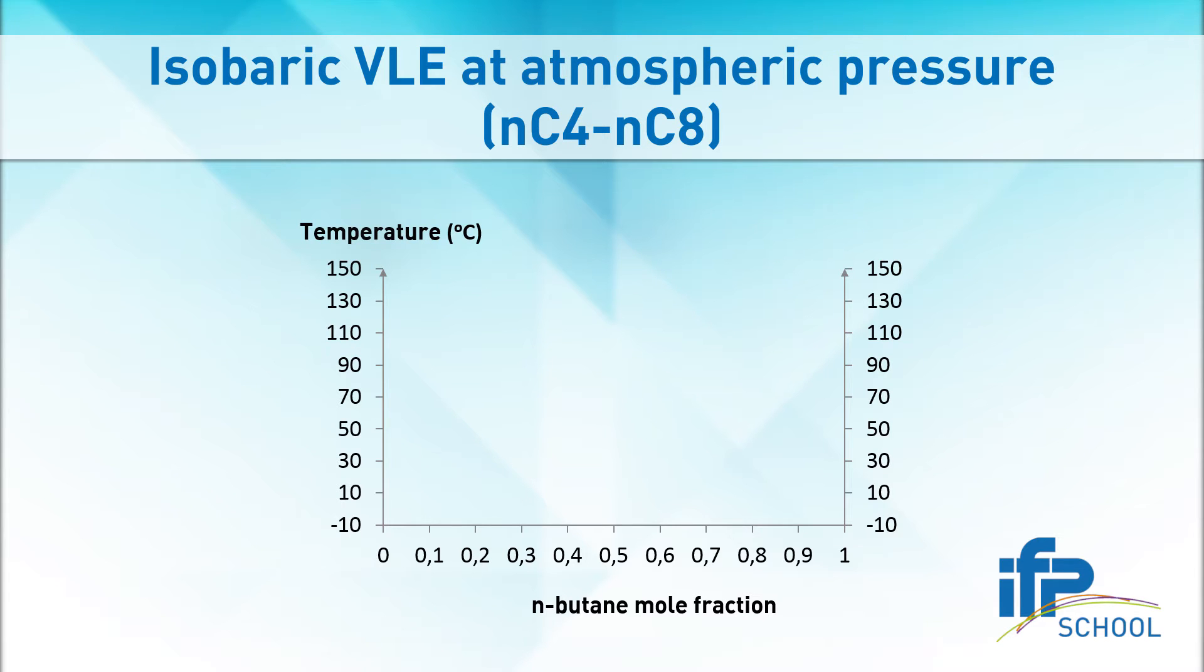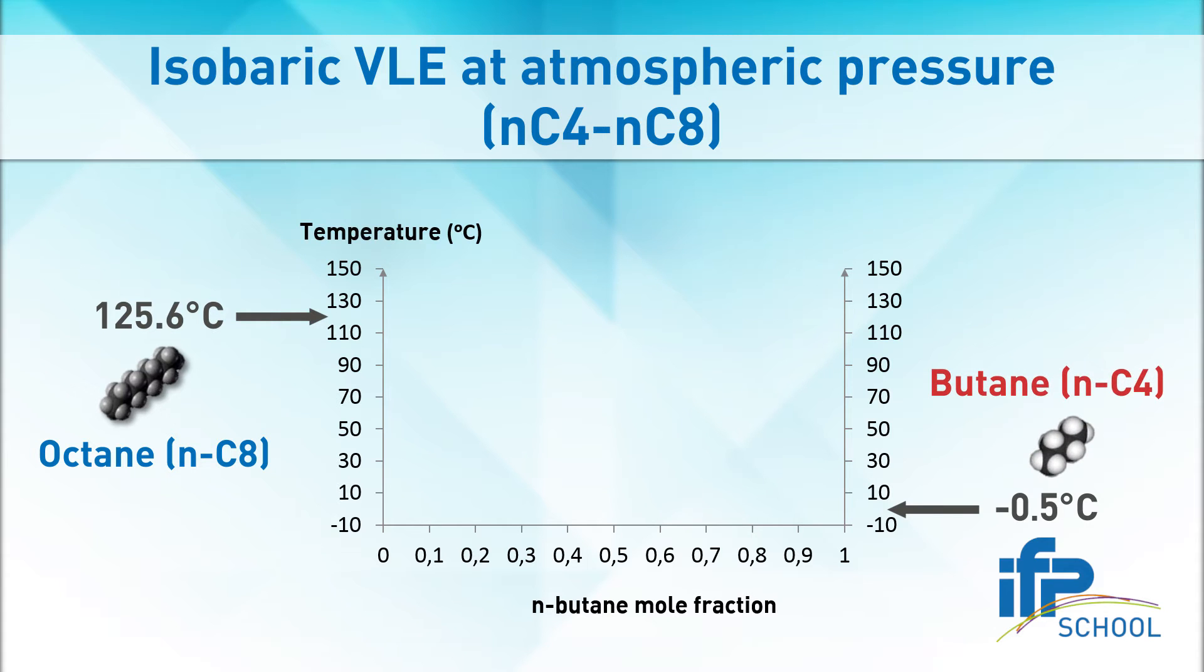It shows the phase behavior of n-butane and n-octane at atmospheric pressure. On the left, 125.6 degrees Celsius, this is the boiling temperature of octane. On the right, minus 0.5 degrees Celsius, this is the boiling temperature of butane. In between you'll find the behavior of the mixture.